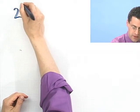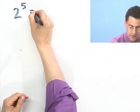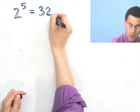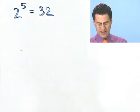So 2 to the fifth equals 32. Let's actually have all these things be interactive, so you get a chance to be boring with me, basically.